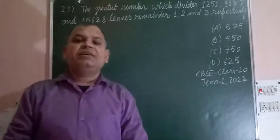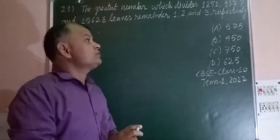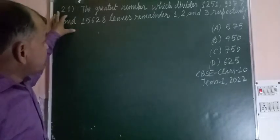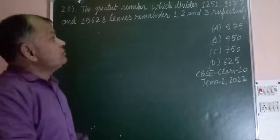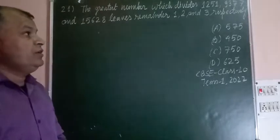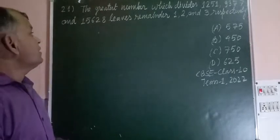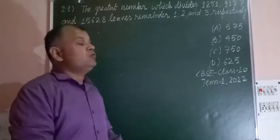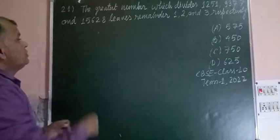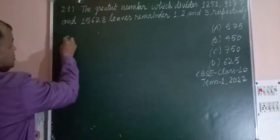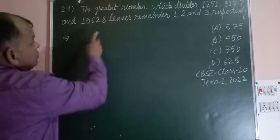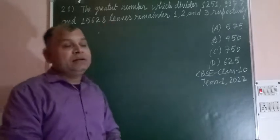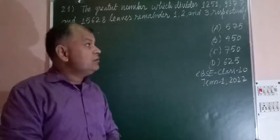Hello friends. In SC class 10 term first, here is a question from the HCF chapter: find the greatest number which divides 1251, 9377, and 15628, leaving remainders 1, 2, and 3 respectively. We want to find out the greatest number.